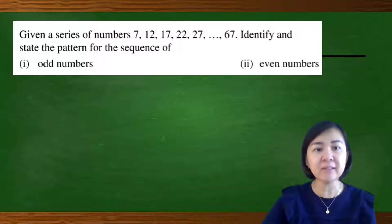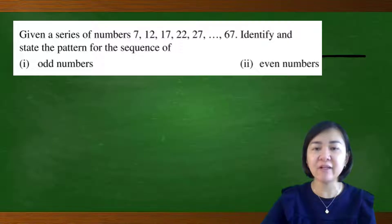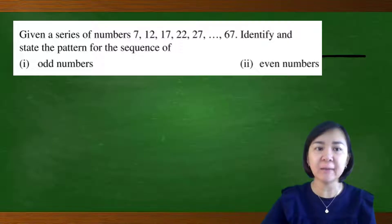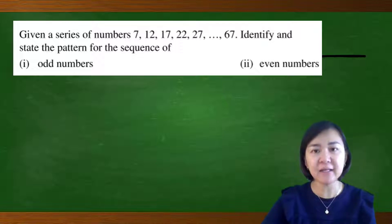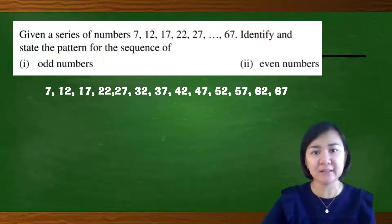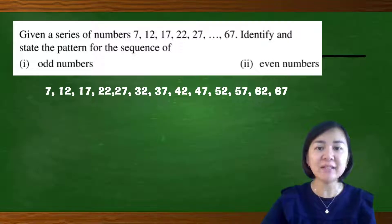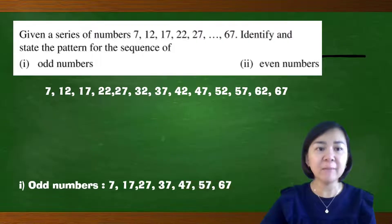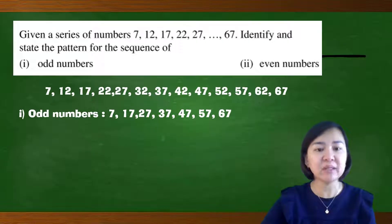Given a series of numbers: 7, 12, 17, 22, 27, until the last term, 67. Identify and state the pattern for the sequence of odd numbers and even numbers. To solve this, we must list out all the numbers from the first term to the last term. The odd numbers are 7, 17, 27, 37, 47, 57, and 67.